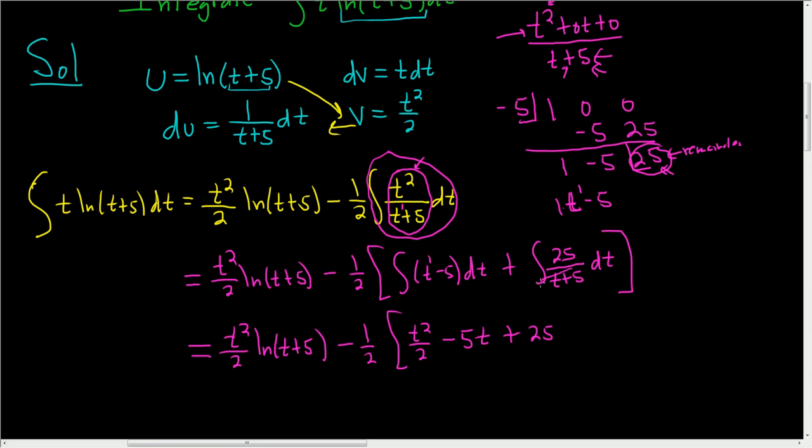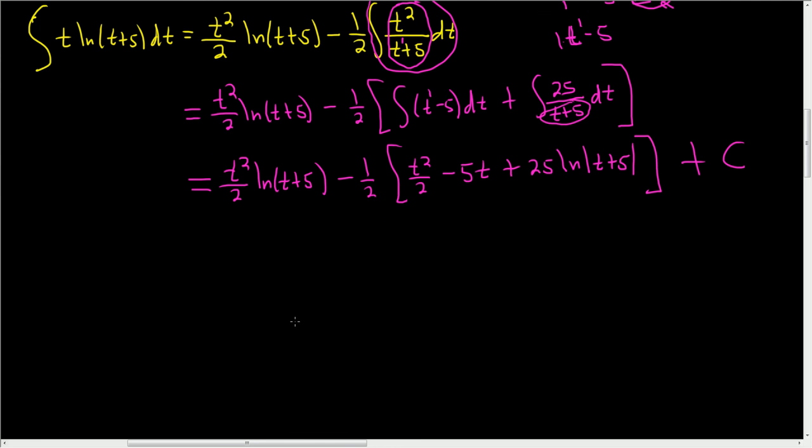Here, when you integrate this, you call this u, and so du is dt, and you're going to get 25 natural log of t plus 5, right? Because du over u is going to integrate to the natural log of the absolute value of u. I'm going to close the bracket and put the plus c at the end, and let's go ahead and distribute that negative 1 half to finish.